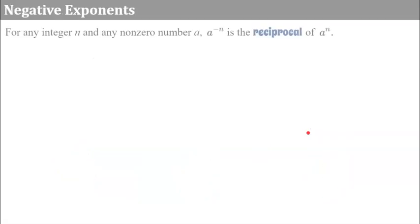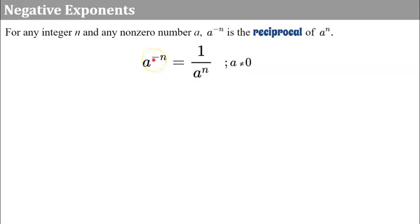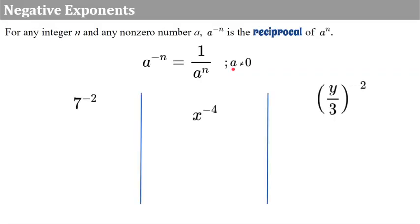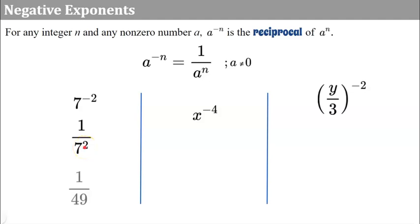Let's review negative exponents. For any integer n and any non-zero number a, a to the negative n is the reciprocal of the power a to the n. So the rule is: a base a to a negative exponent equals one over a to the positive exponent — flip and make the exponent positive, remembering that a cannot be zero. For example, seven to the negative two becomes one over seven squared, which simplifies to one over 49.